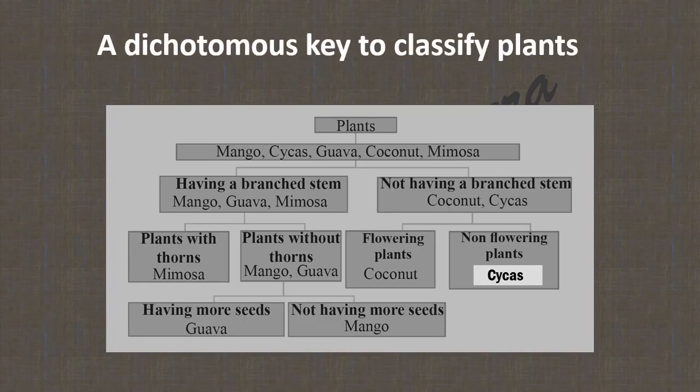Now we prepare a dichotomous key to classify plants. The list of plants: mango, cycas, guava, coconut, and mimosa. First divide into two groups — having a branched stem: mango, guava, and mimosa; not having a branched stem: coconut and cycas. Those with a branched stem are divided into plants with thorns (mimosa) and without thorns (mango and guava). Mango and guava are divided by having more seeds: guava has more seeds, mango does not. Coconut and cycas are divided into flowering plants (coconut) and non-flowering plants (cycas).